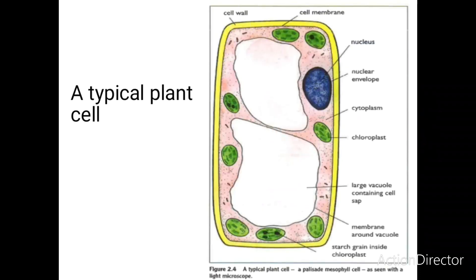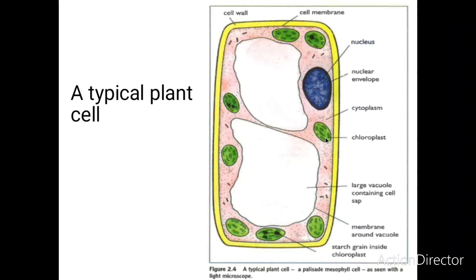This is what a typical plant cell looks like. It has got a cell membrane, and just outside the cell membrane it has got a cell wall. A typical plant cell also has a nucleus with a nuclear envelope surrounding the nucleus. It also has chloroplasts, the cytoplasm, a large vacuole containing cell sap, and starch grains inside the chloroplast.